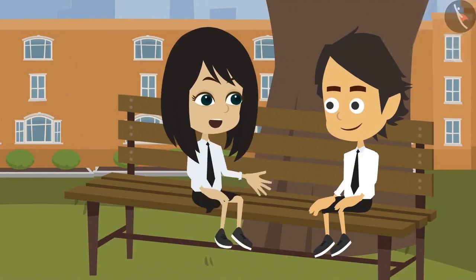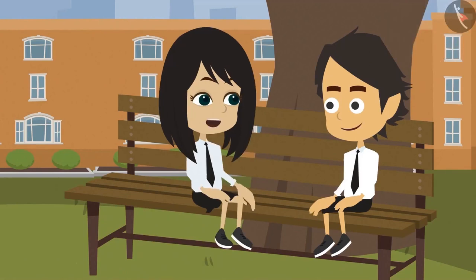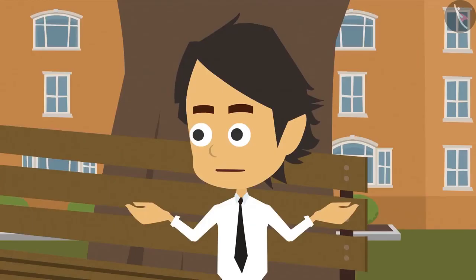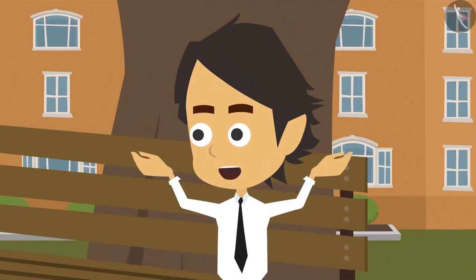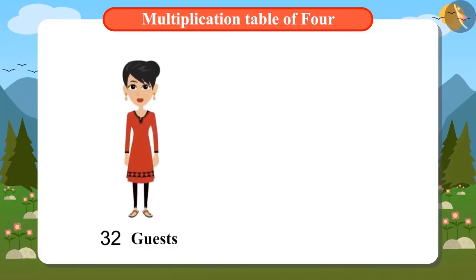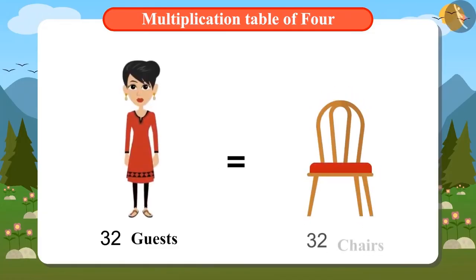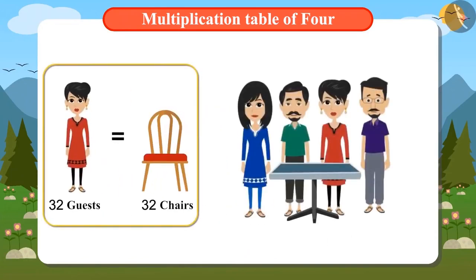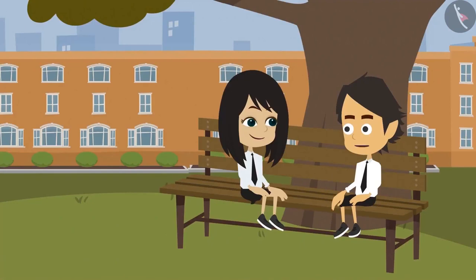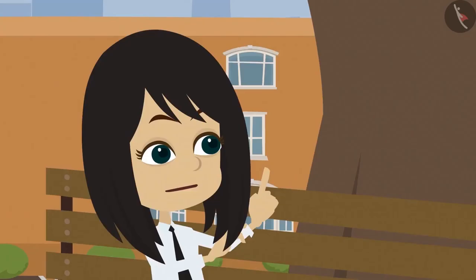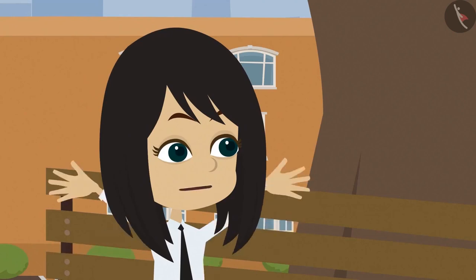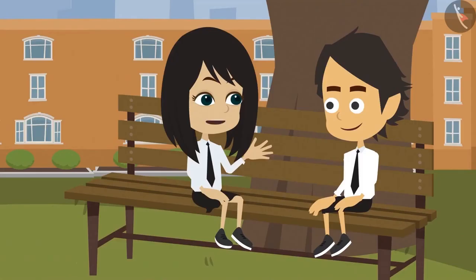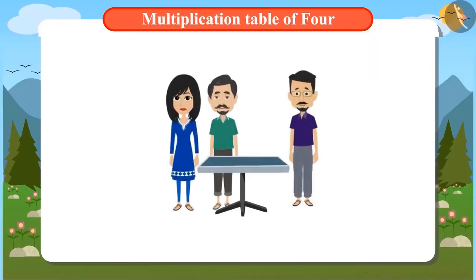You can find out the number of tables in the same way you found out the number of chairs. There are a total of 32 guests coming, so the number of chairs will also be 32. But a table will be used by many, and that is why I am puzzled. Come on, I will help you. Just tell me the total number of guests. 32. And how many guests can use one table? 4. Each table is for 4 guests.